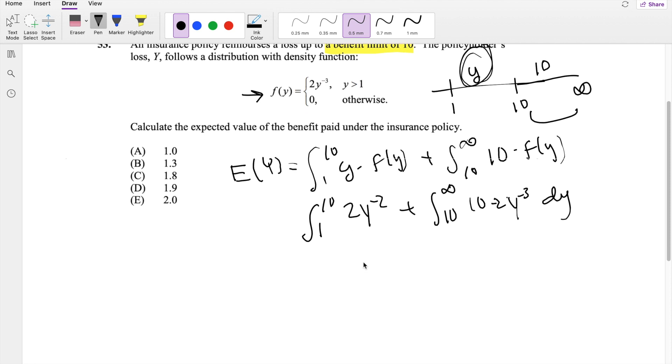Taking the anti-derivative here, you get Y to the negative 1, minus 2, going from 1 to 10, plus, this is 20. 20Y to the negative 2, divided by negative 2, going from 10 to infinity.